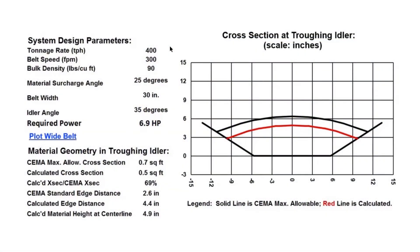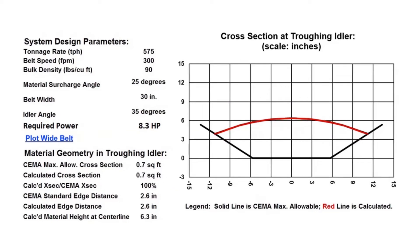This is the screen we looked at earlier and it shows 400 tons per hour on a 30 inch wide belt. It requires 6.9 horsepower and it will fill 69% of the CEMA recommended cross section.